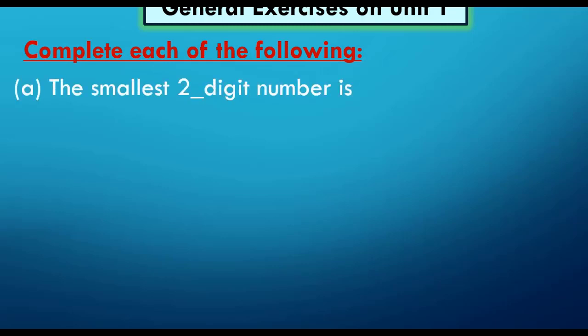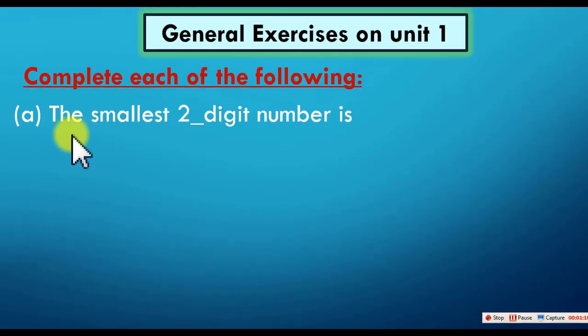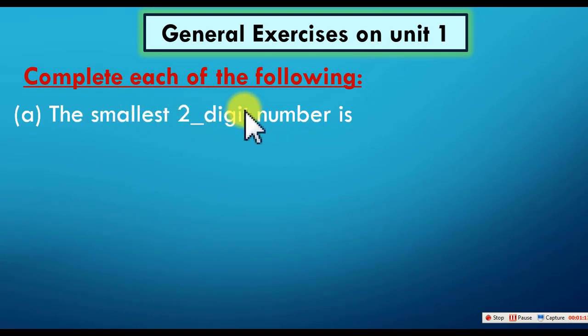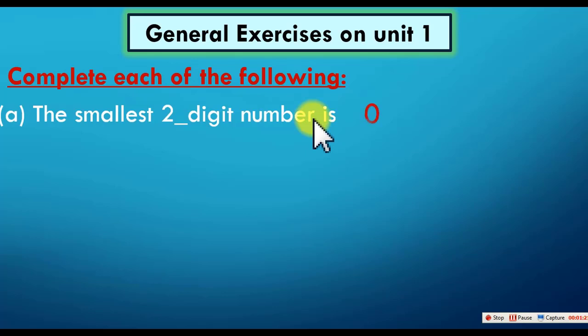Complete each of the following. The smallest two-digit number is... This question is repeated a lot in Grade 1. We need to confirm the meaning of the word 'smallest' — it means الأصغر, the least. Also, 'two-digit number' means عدد مكون من رقمين. So the smallest two-digit number is ten.